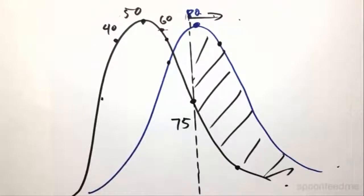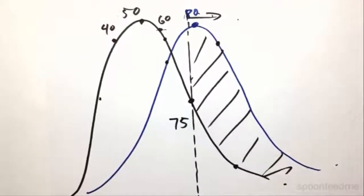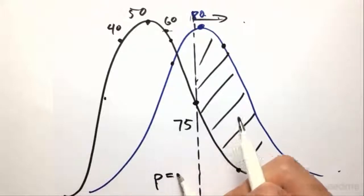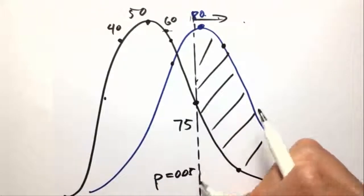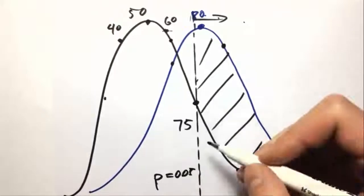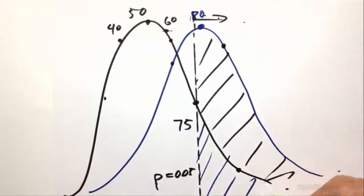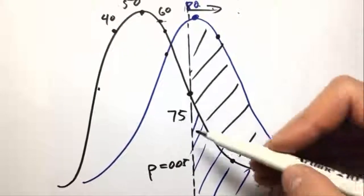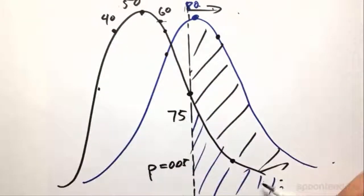But because we have our decision-making cutoff of the p-value as p equals 0.05, which is this line here, there's a 5% chance that we got it wrong, that it's actually a normal coin.